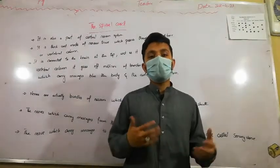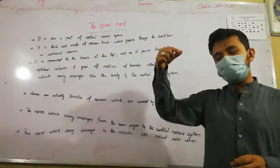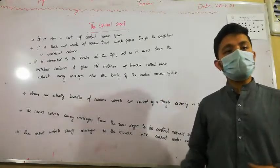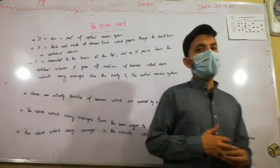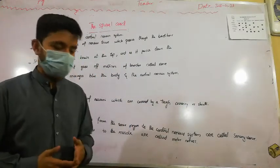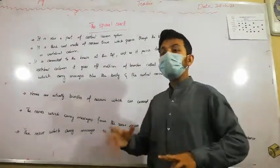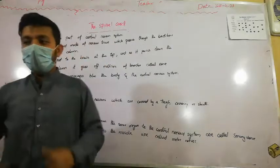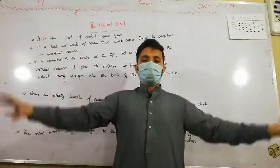So the structure of the spinal cord is that it is a thick cord which runs down towards our vertebral column. It is connected to the top of the brain and runs downward through the vertebral column, from where millions of branches emerge from it.